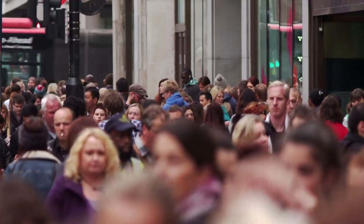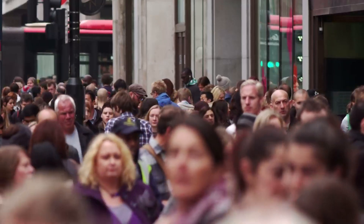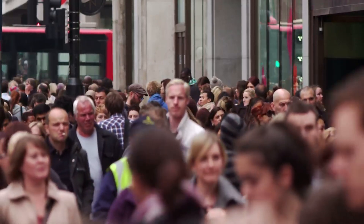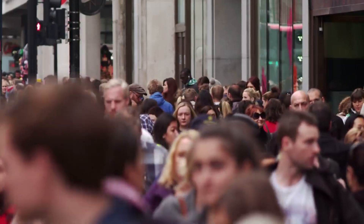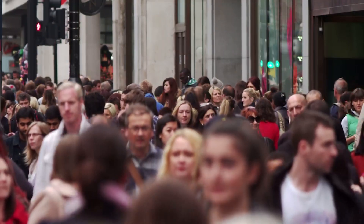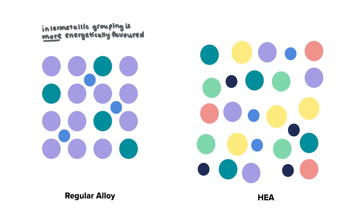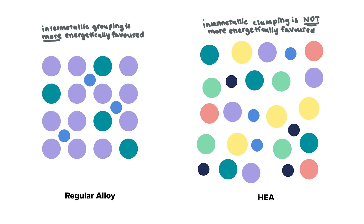Imagine a crowded room where everyone is moving around randomly. The movement is disordered, but it's stable because everyone has just enough space to move, but not to separate into distinct groups. While you can't get that as much with two or three elements, the diverse and random arrangement that comes with five or more elements actually makes the overall structure more thermodynamically favorable.